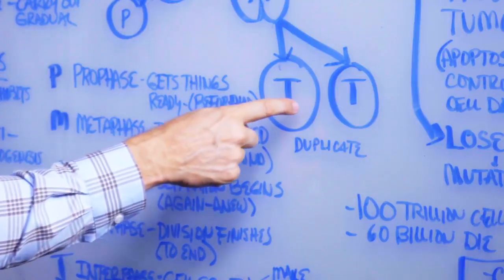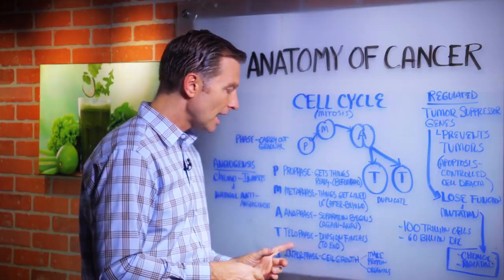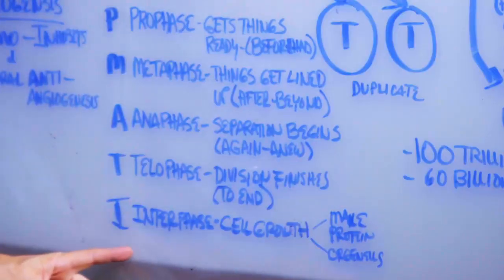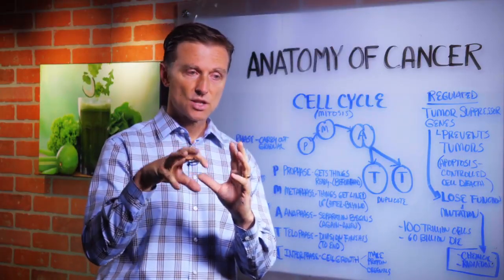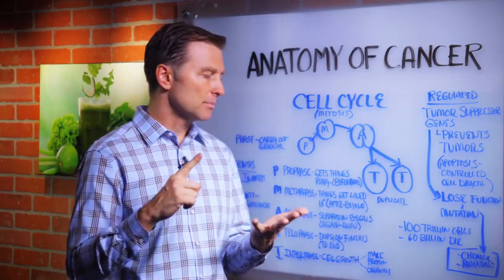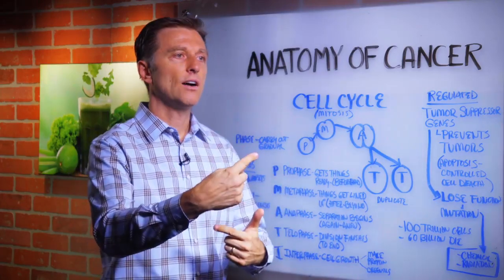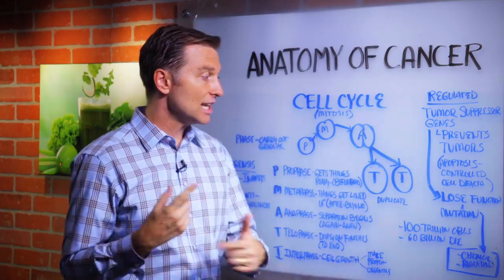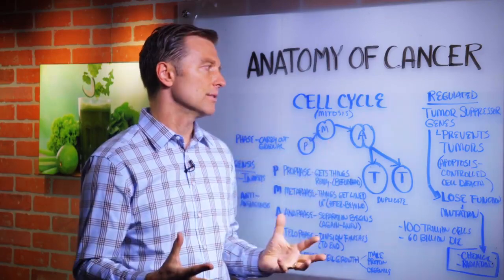Then we get to the telophase, where the division finishes completely. The derivation of 'tele' means to end, so it's a completed cycle. And lastly, we have the interphase, where the cell is a finished product — all the inside of the cells is growing, developing, doing its function, making proteins and little structures. That goes on for a while until the whole cycle starts again. So we have this perfect machine: a copy machine completely separating, duplicating, and growing cells.